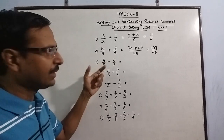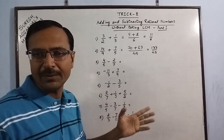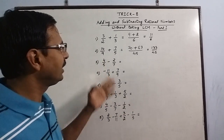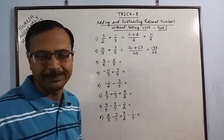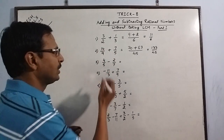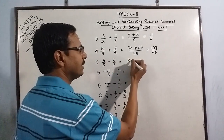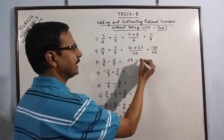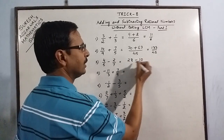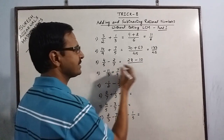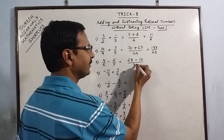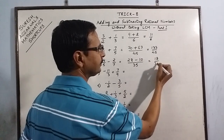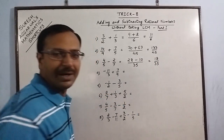The same procedure we apply for subtraction. The method remains the same irrespective of the sign — the operation can be addition or subtraction. For example: 7/4 minus 5/7 gives us 28 minus 20, wait — 7 times 4 is 28 minus 5 times 2 is 10, upon 5 times 7 is 35. The answer is 18/35.